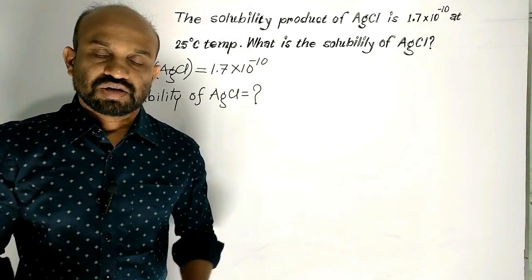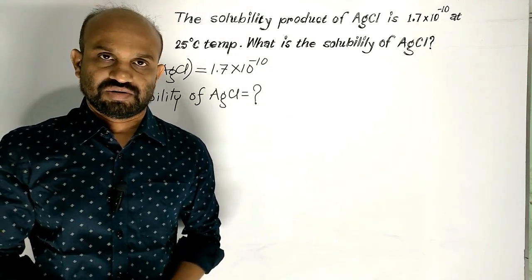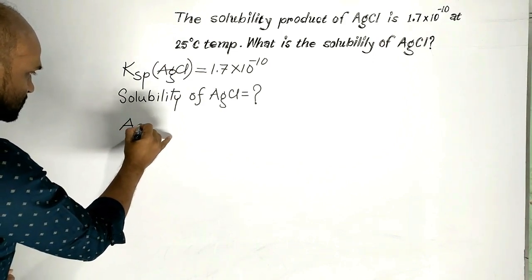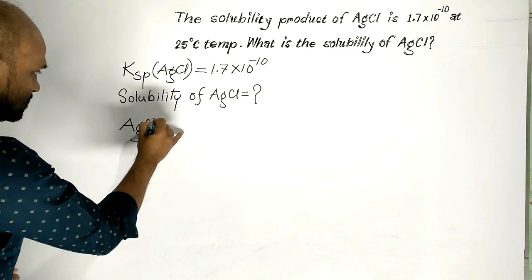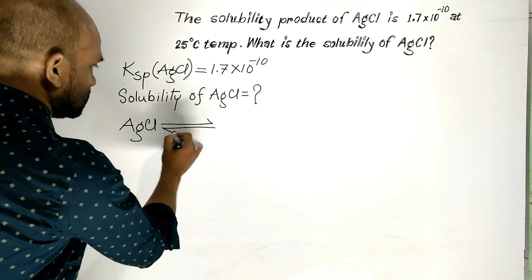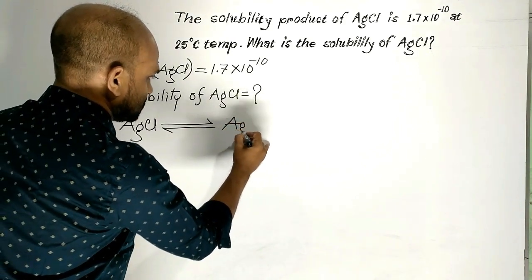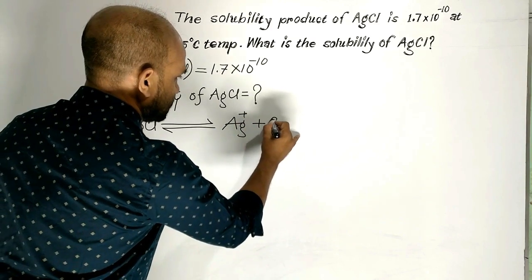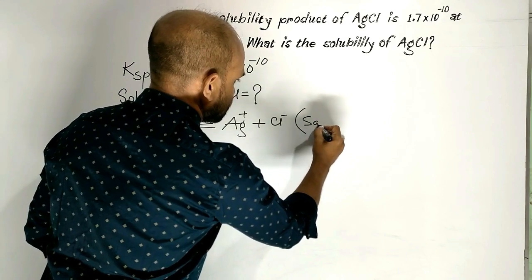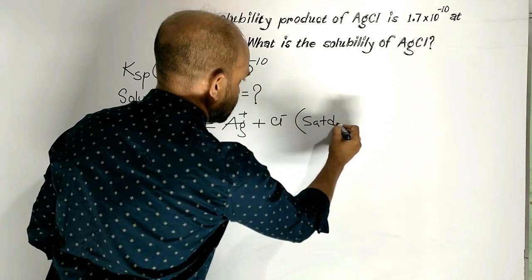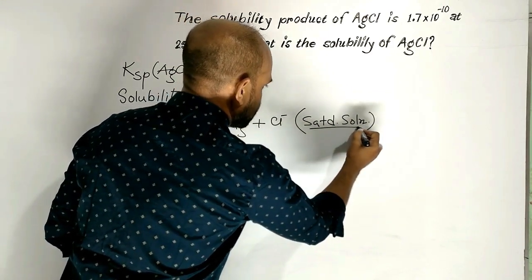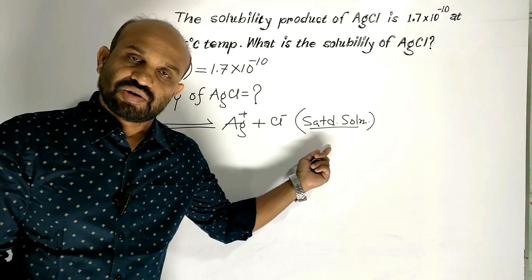Let us find the solubility of silver chloride. Sparingly soluble salt, silver chloride, establishes an equilibrium state with its ions — silver ion and chloride ion — in its saturated solution. This is important to mention in the case of solubility.